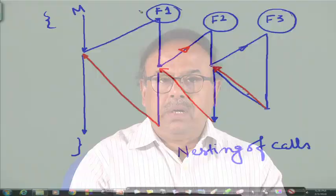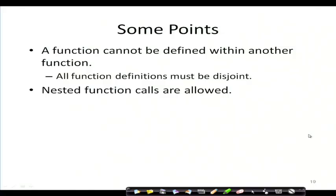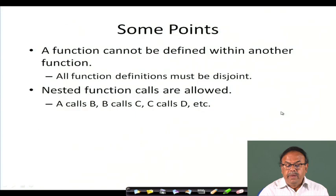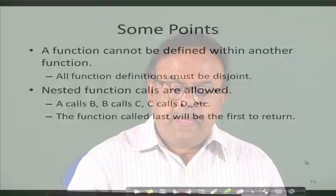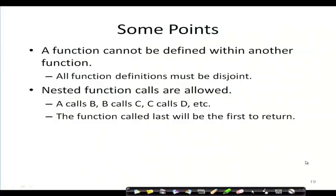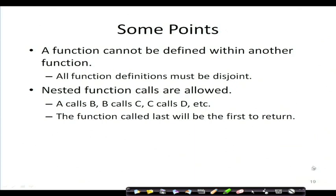So nested function calls are allowed: A calls B, B calls C — as shown, M calls F1, F1 calls F2, F2 calls F3. The function called last will be the first to return. Also, a function can call itself, either directly or in a cycle — we will see this separately.